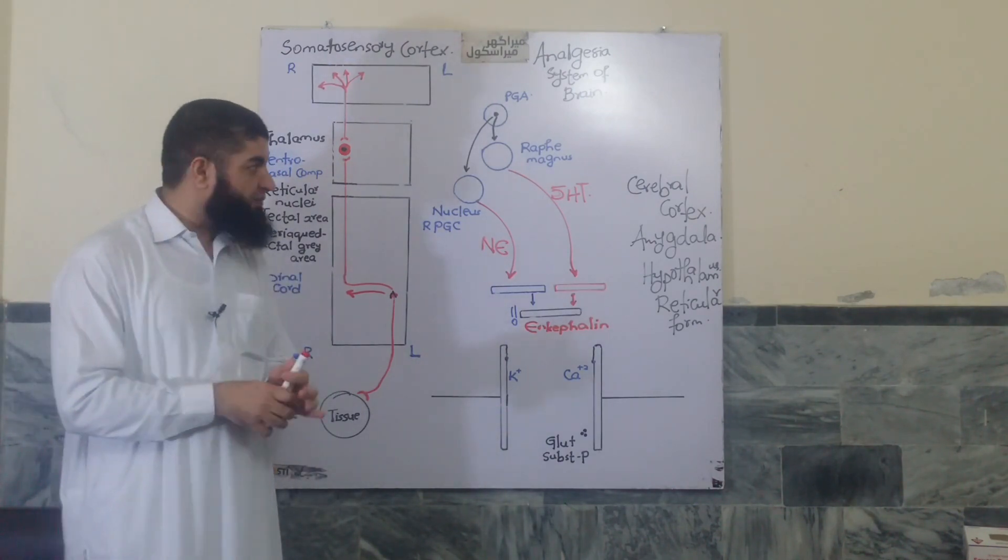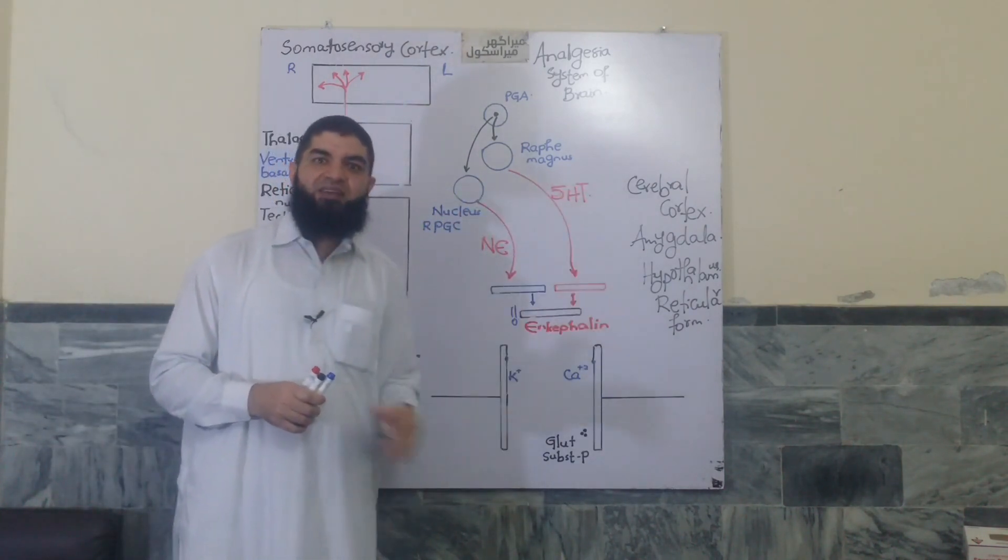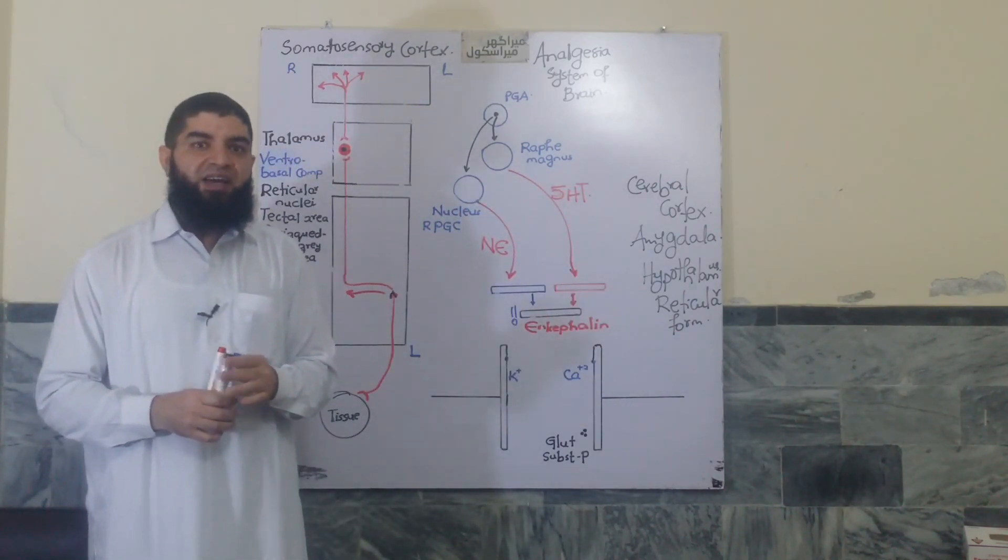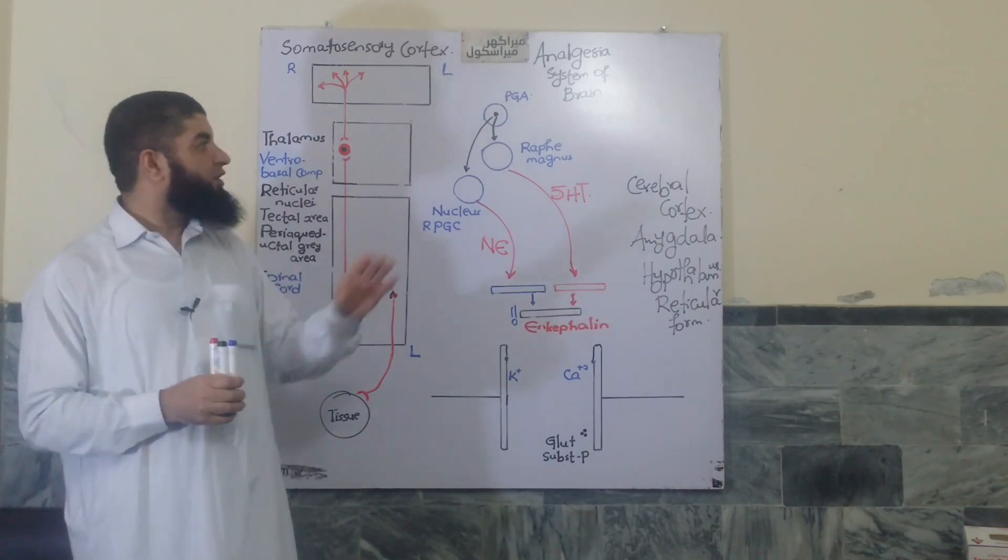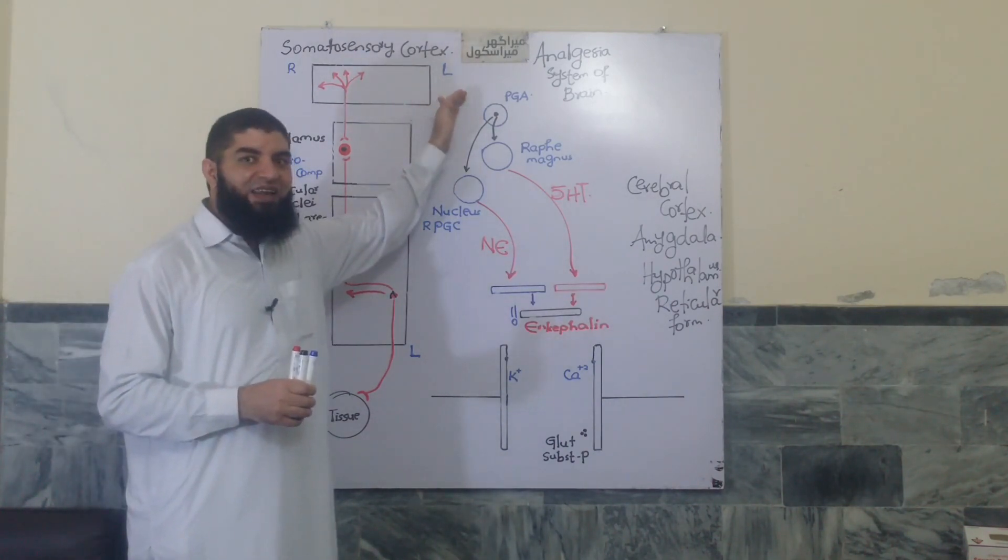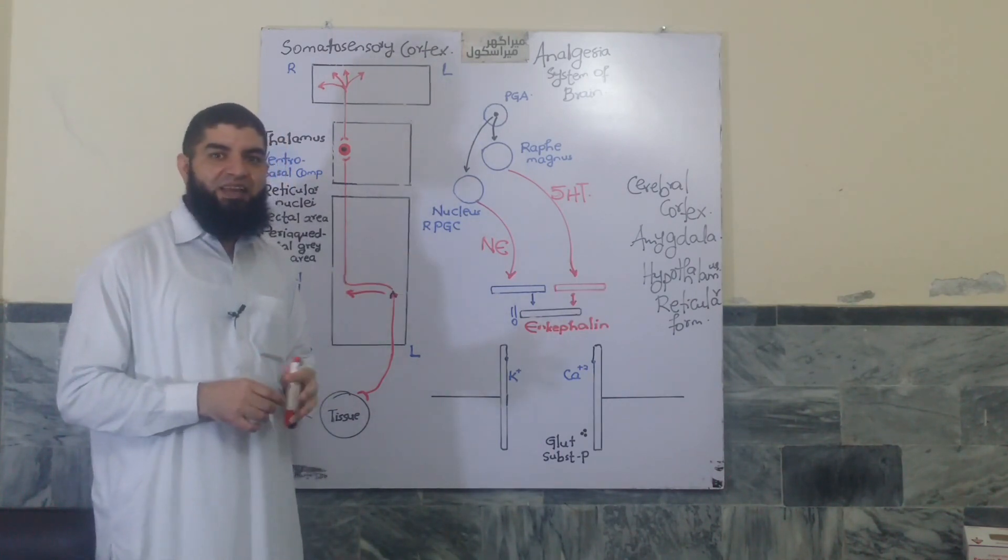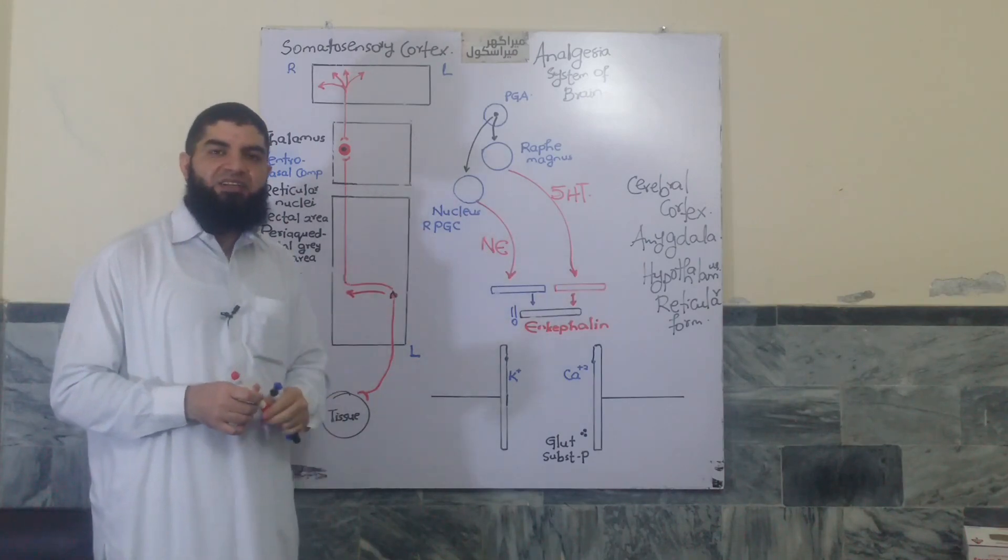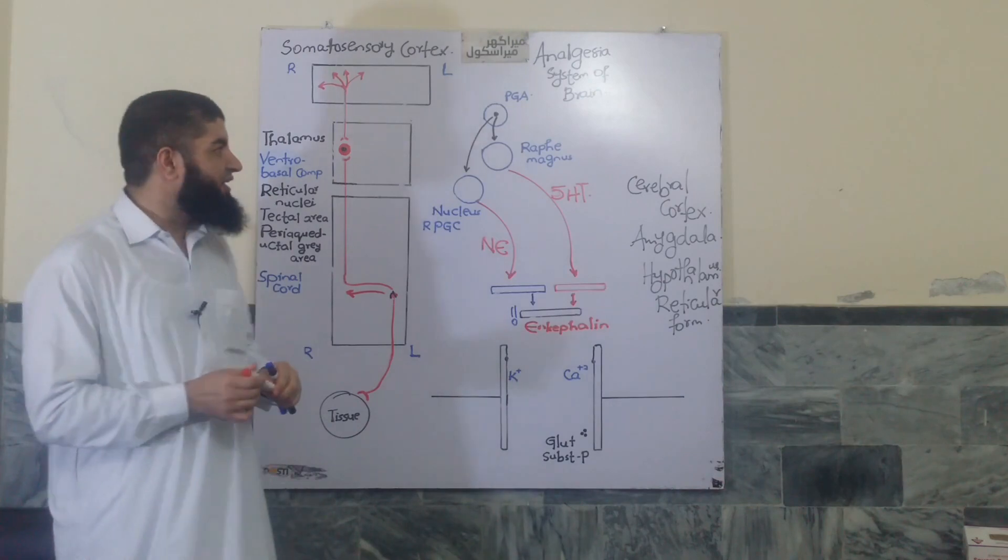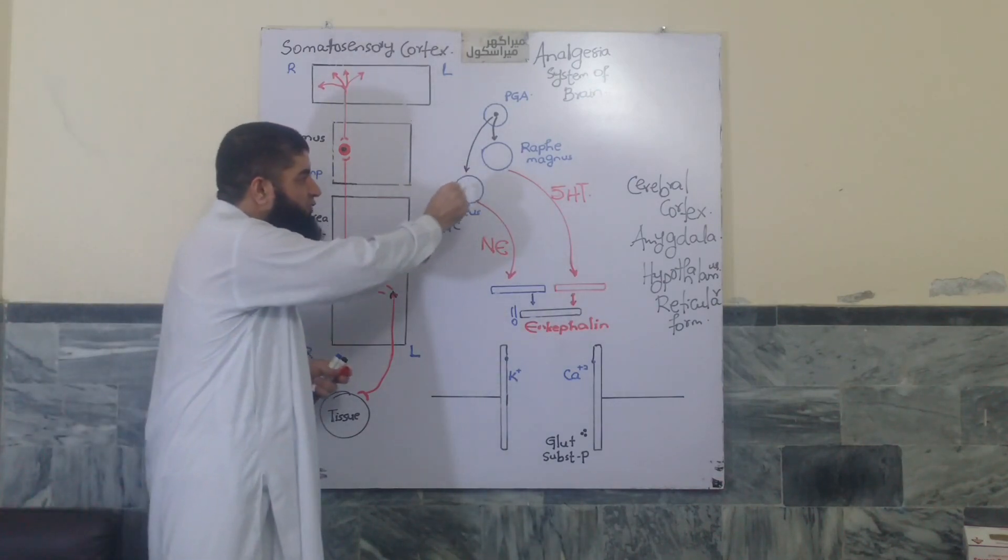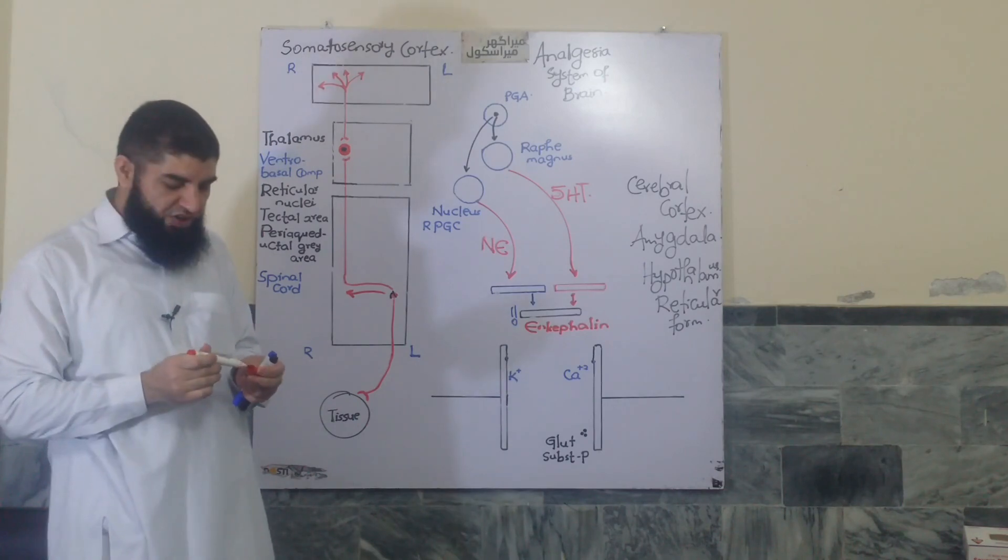Whenever there is pain, the higher centers, the cerebral cortex, the amygdala, the hypothalamus, and to some extent the reticular nuclei send signals to the periaqueductal gray area to suppress those pain signals. Now the gray matter here, the periaqueductal gray area surrounding the aqueduct of sylvius sends neurons to nuclei in the reticular formation. We have two such nuclei,